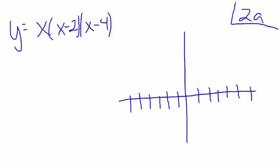2a here. I want to graph this guy. This thing, I can tell by looking at it, that it has three zeros.